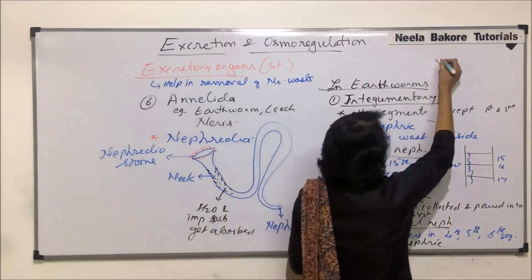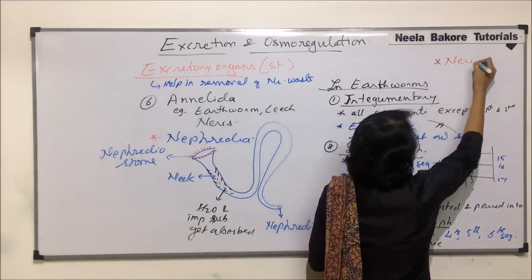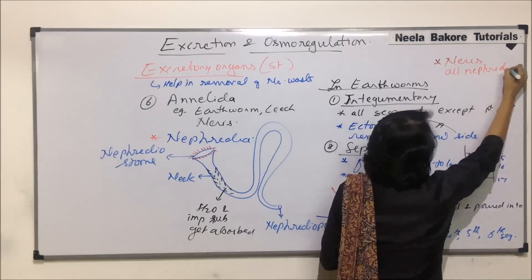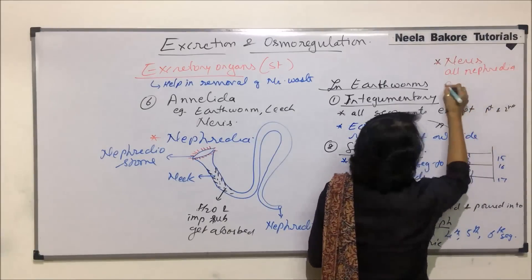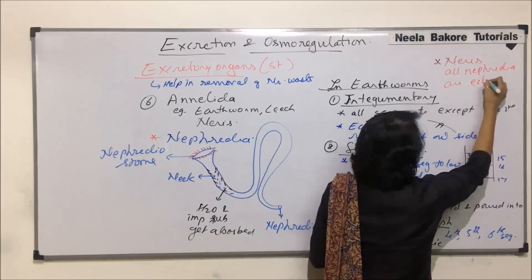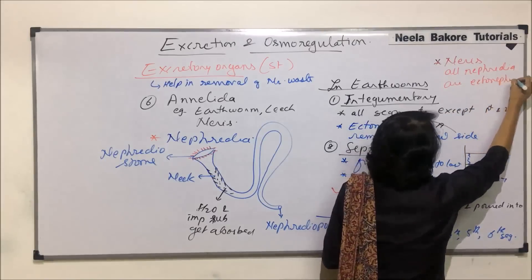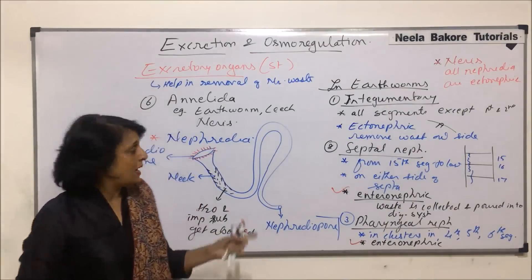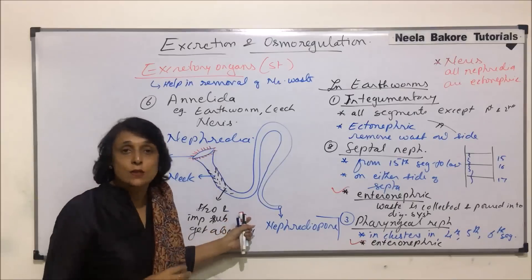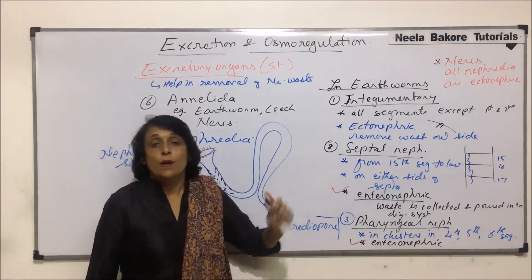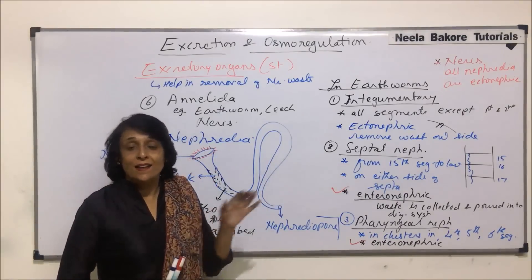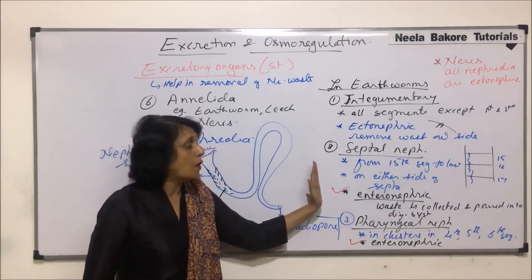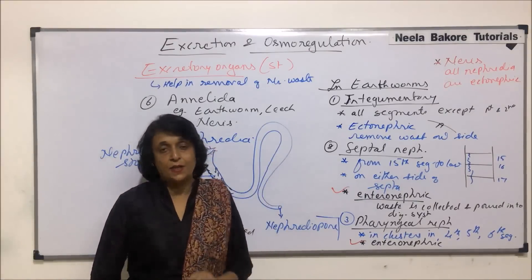One special thing to note about Nereis is that all nephridia are ectonephric. In leeches, there are different types again, also based on size. When we talk of these annelids, we refer to nephridia as the excretory structure.